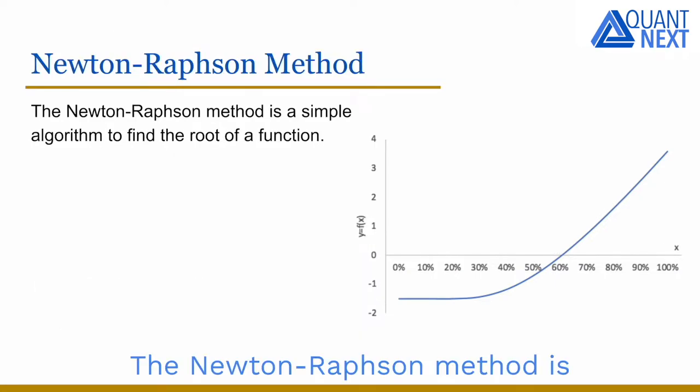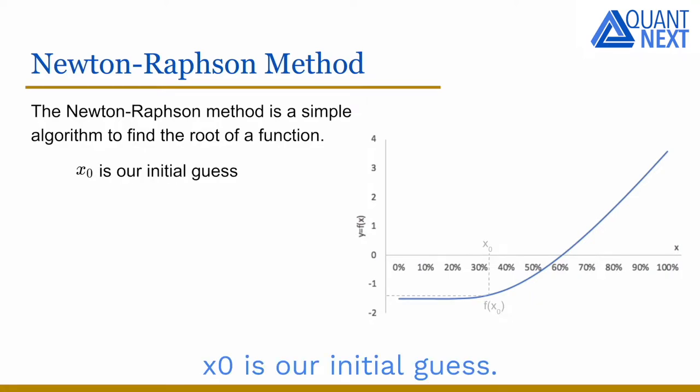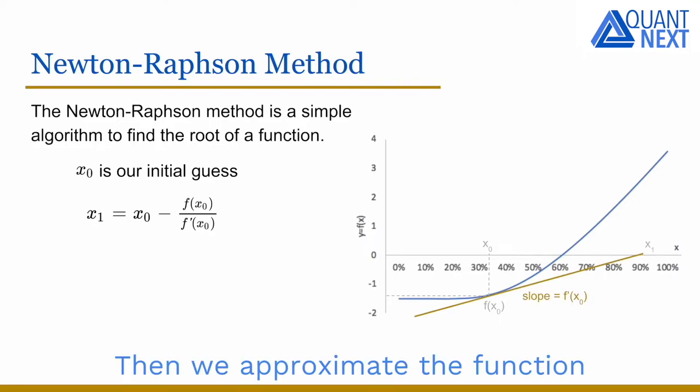The Newton-Raphson method is a simple algorithm to find the root of a function. x0 is our initial guess. Then we approximate the function by its tangent line and our new guess is the x-intercept of this line.